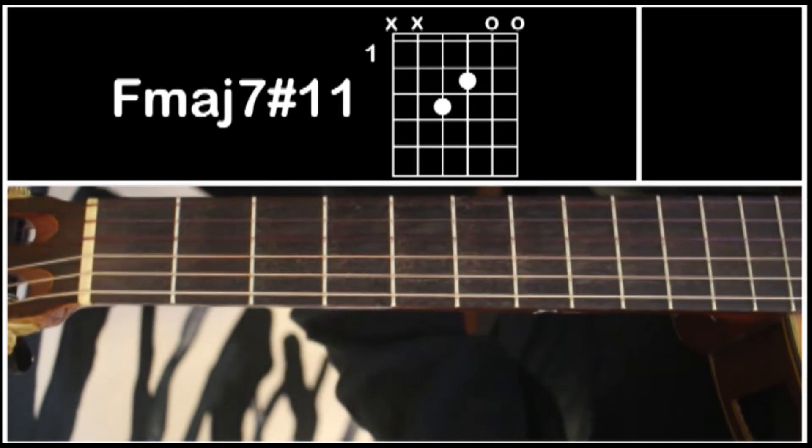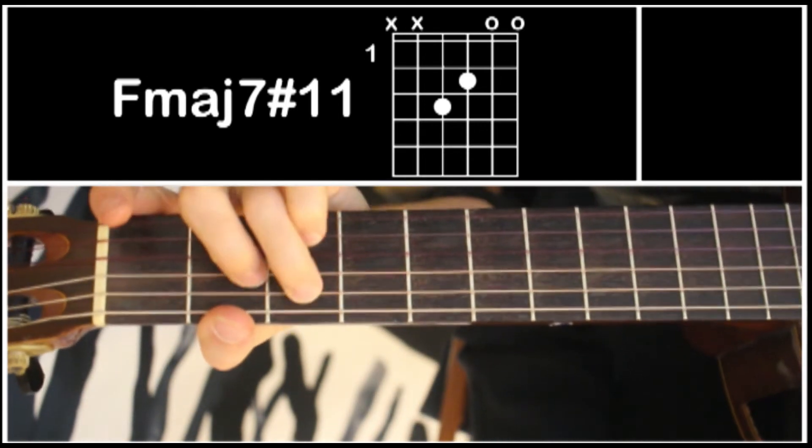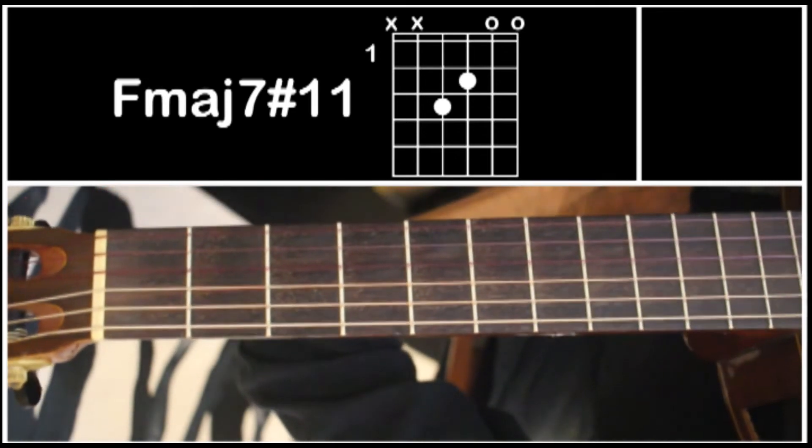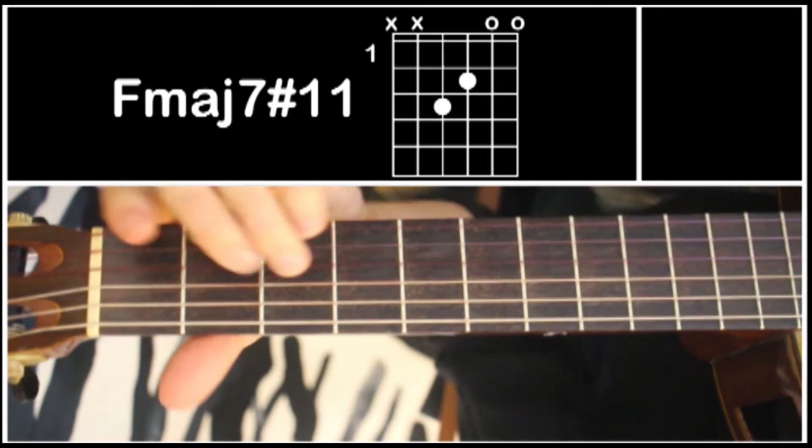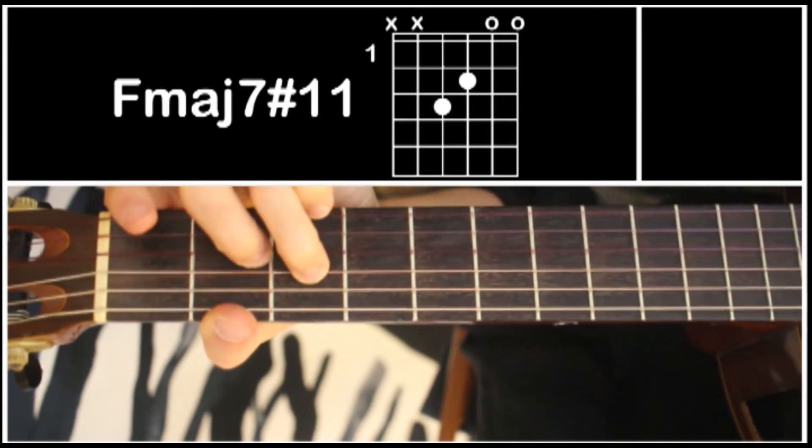And you can use this in place of only some major chords. It's mainly something that you can use on the fourth of your scale of the key. So if you're in the key of C, you'd be using the F major 7 sharp 11.